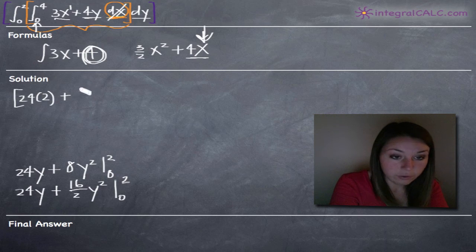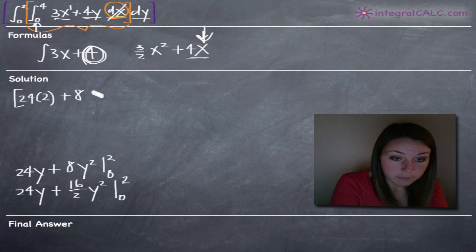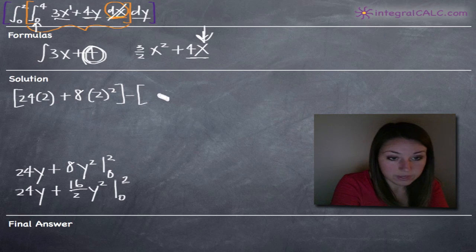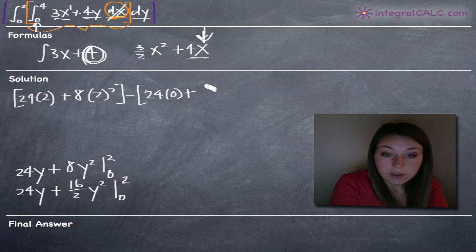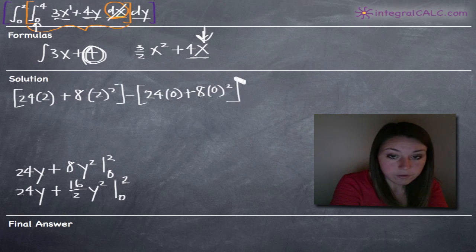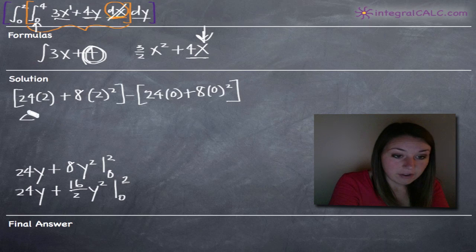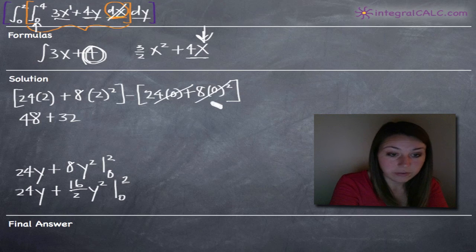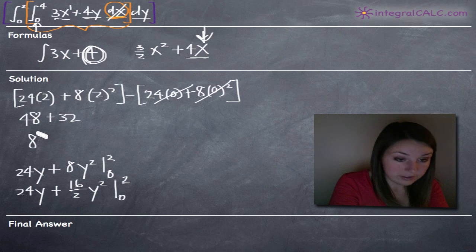Alright, so 24 times 2 plus 8 times 2 squared minus what we get when we plug in 0, so 24 times 0 plus 8 times 0 squared. Okay, and that'll give us 48 plus 2 squared is 4 times 8 is 32. This will reduce to 0 and this will reduce to 0 so we don't have to worry about that. 48 plus 32 is 80.